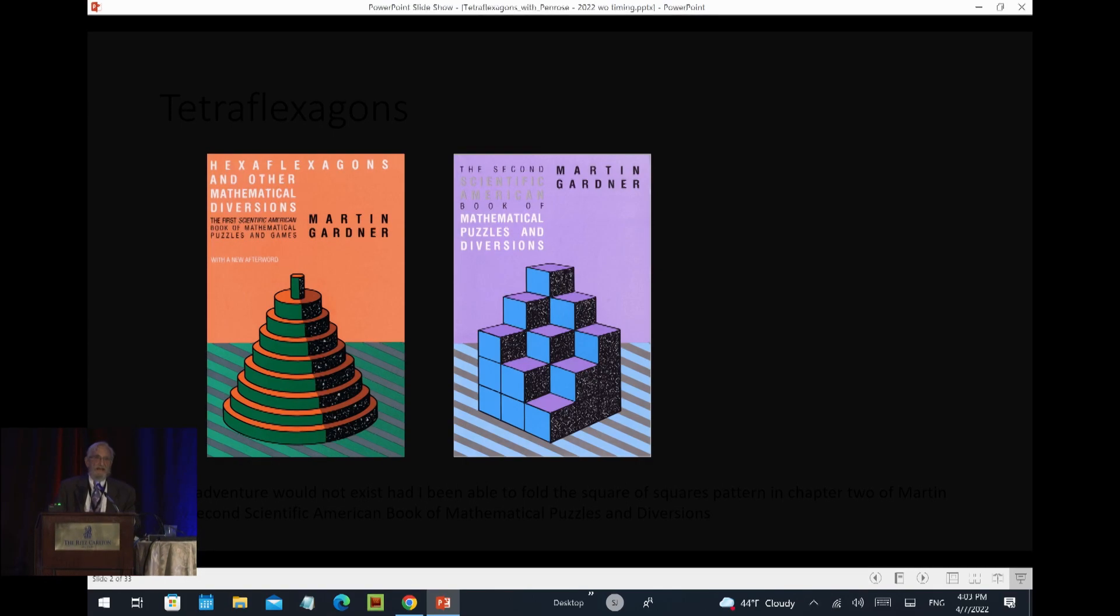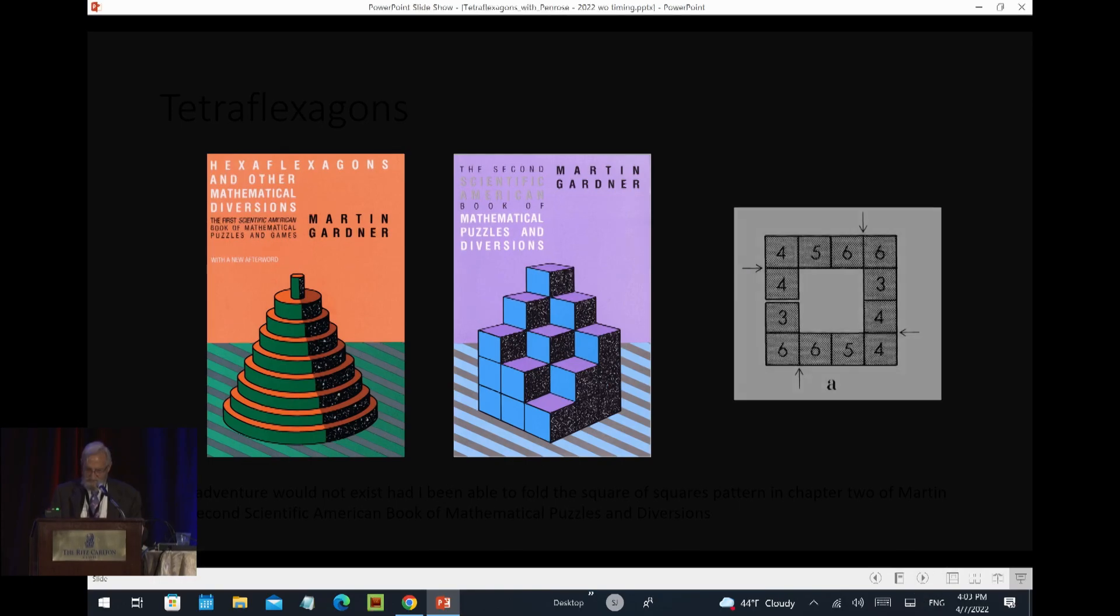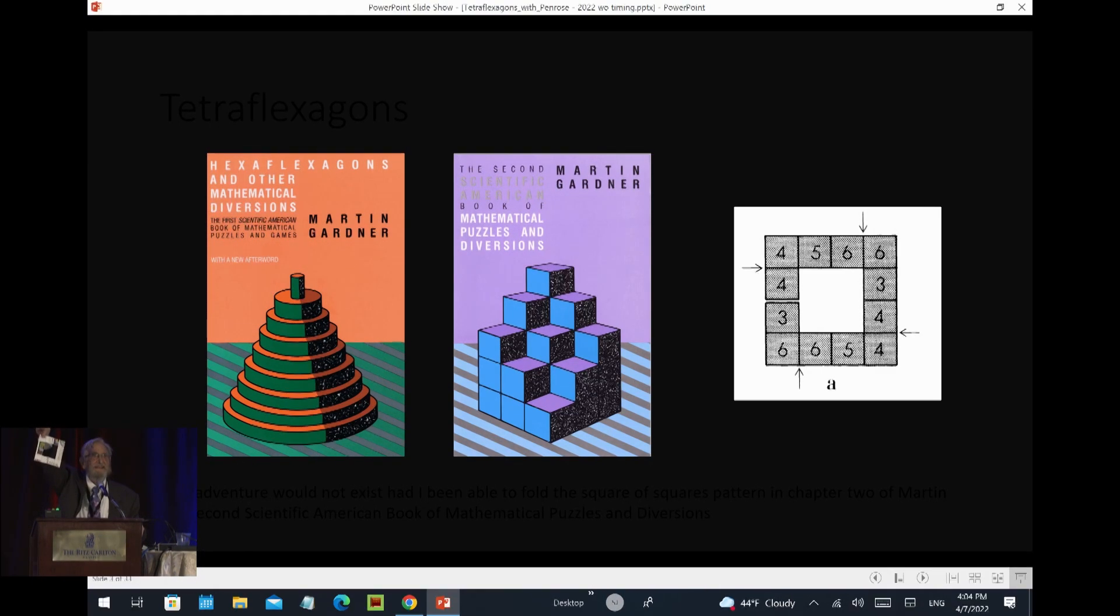Two years later in 1961, Martin Gardner publishes a second book of mathematical puzzles and games. In this book he outlines a tetraflexagon, but the tetraflexagon that he outlined looked like this. This is what I call the square of squares tetraflexagon.